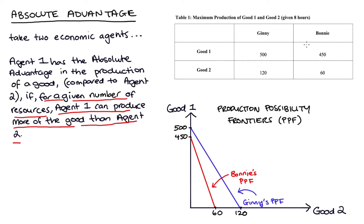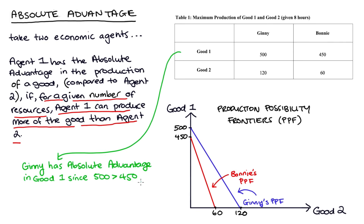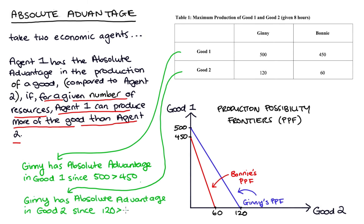If I look at the row corresponding to good one, you can see that with eight hours, Ginny can produce 500 of good one and Bonnie can produce 450. Since 500 is greater than 450, we say Ginny has an absolute advantage in the production of good one. In our example, Ginny also has an absolute advantage in producing good two, because she can make 120 of good two with those eight hours, but Bonnie can only make 60, and 120 is greater than 60. That's a standard application of the definition of how to find absolute advantage.